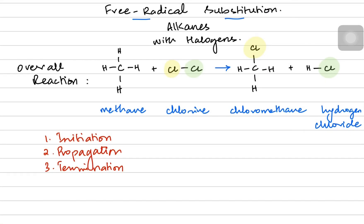In the previous video we were talking about the free radical substitution reaction of alkanes. It happens with halogens and the main condition is ultraviolet light, which helps in initiating the process. There were three steps: initiation, propagation, and termination. Let's do some past paper questions to practice those.